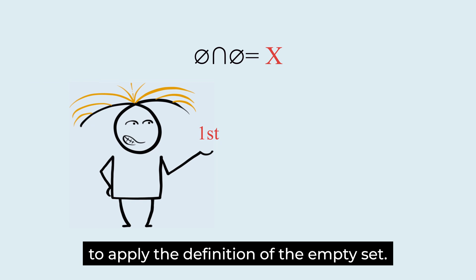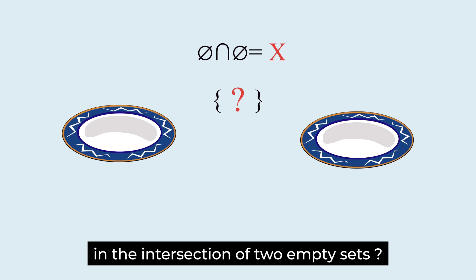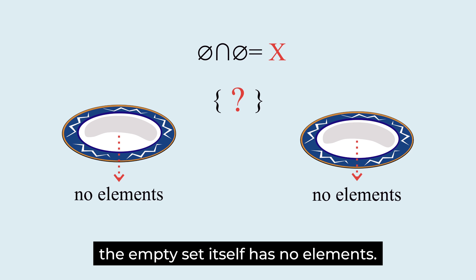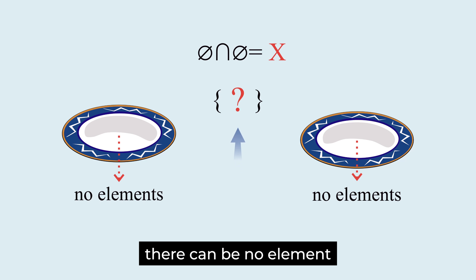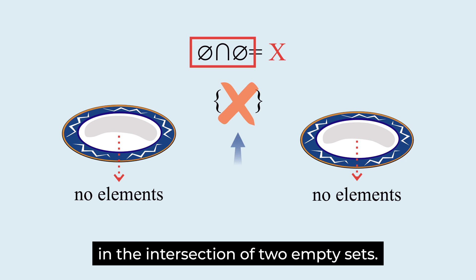The first way is to apply the definition of the empty set. Are there elements in the intersection of two empty sets? The empty set itself has no elements. As a result, there can be no element in the intersection of two empty sets.